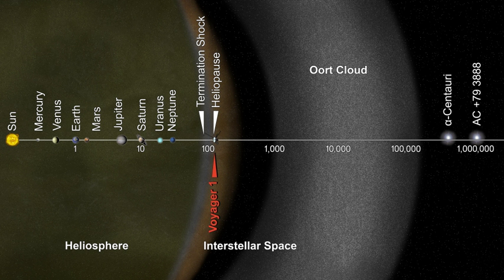It is divided into two regions: a disk-shaped inner Oort cloud and a spherical outer Oort cloud. Both regions lie beyond the heliosphere and in interstellar space. The Kuiper belt and the scattered disk, the other two reservoirs of trans-Neptunian objects, are less than 1,000th as far from the Sun as the Oort cloud. The outer limit of the Oort cloud defines the cosmographical boundary of the Solar System and the extent of the Sun's Hill sphere.